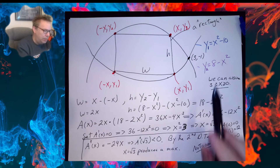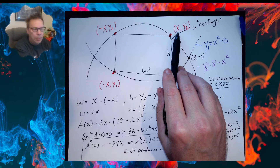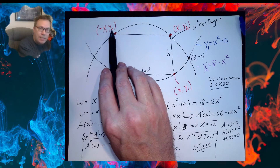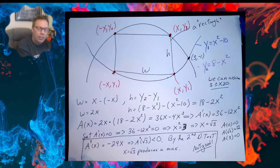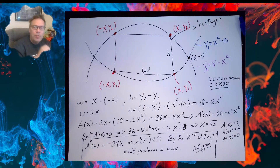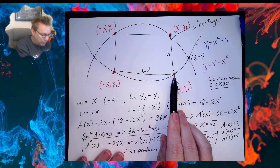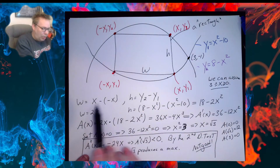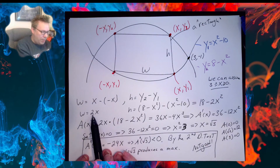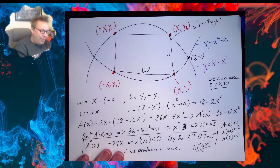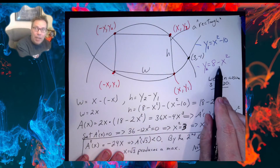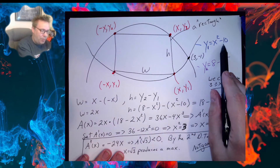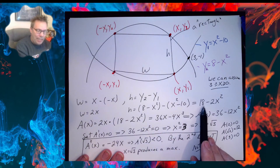One thing you should notice is that if I take whatever value I put in here — say I put in the number 1 — negative 1 also has the same y value, y2 in this case, because this is a horizontal line and we're dealing with x squared. So this question is about the area of a rectangle. I need a width and I need a height. The width is a difference of two x's: the large x minus the small x, which gives me a width of 2x. The height is always top minus bottom: y2 minus y1, where y2 is 8 minus x squared and y1 is x squared minus 10. Combining like terms gives 18 minus 2x squared.